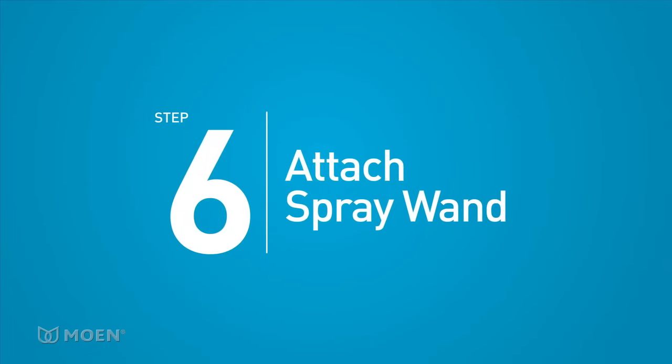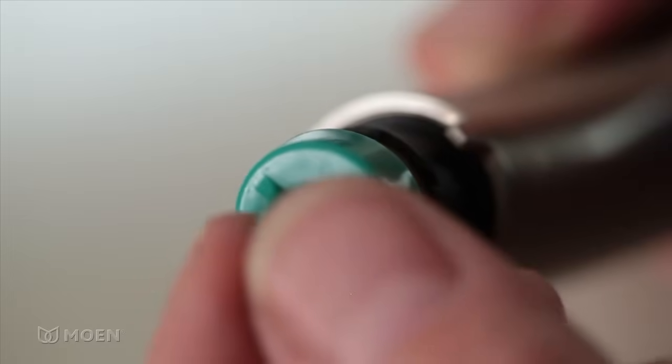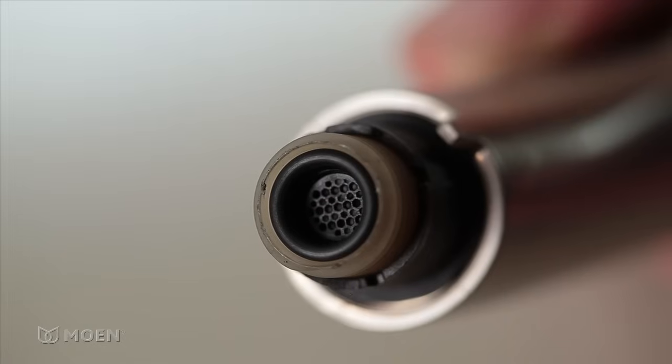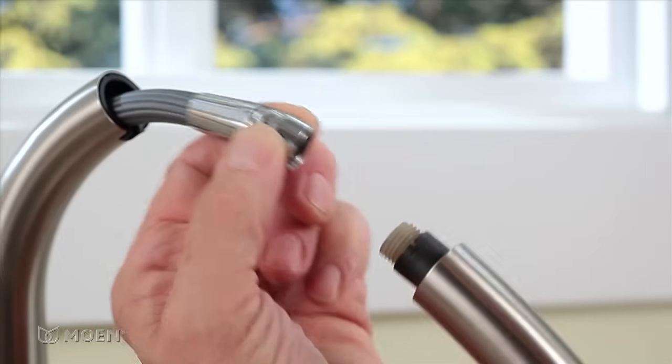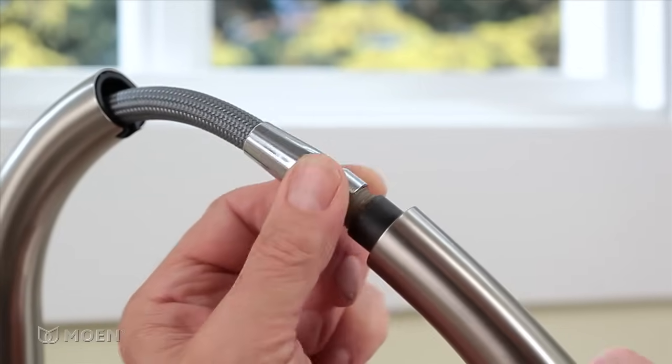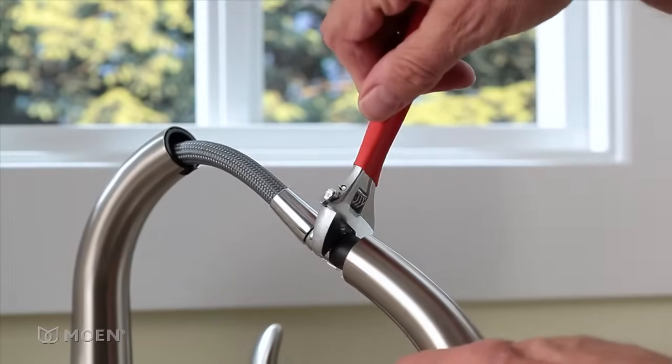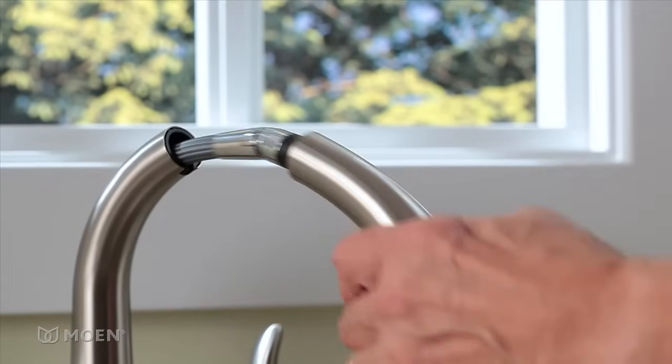Step 6. Attach the spray wand to the pull-out hose. Remove the protective cover on the end of the spray wand. Make sure the rubber washer and screen are in place. Thread the spray wand onto the pull-out hose. Tighten it with an adjustable wrench just until the hose nut is flush with the wand. Be careful not to over tighten.